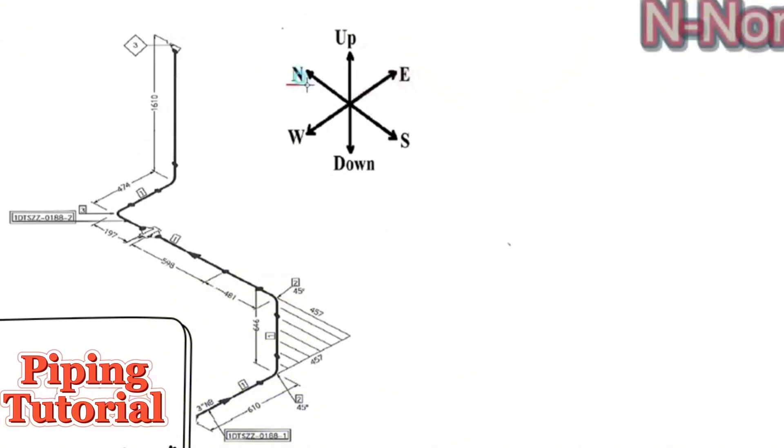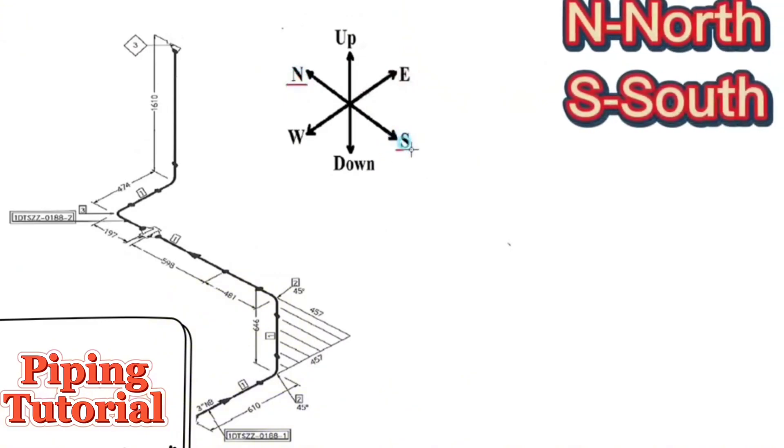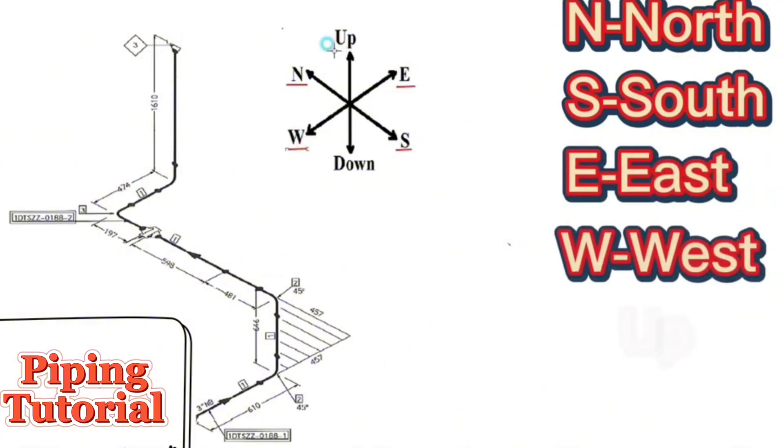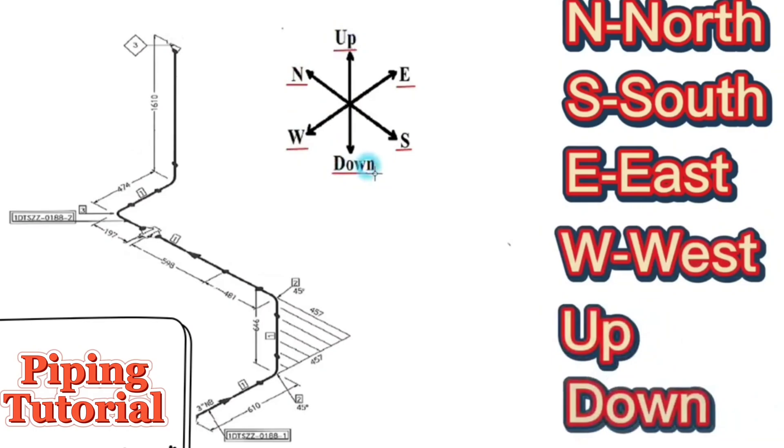N means north. S means south. E means east. W means west. Up means up. Down means down directions.